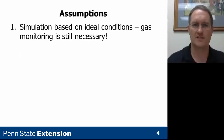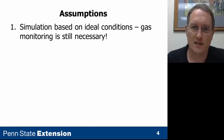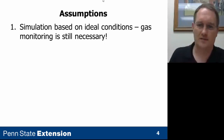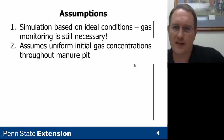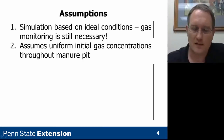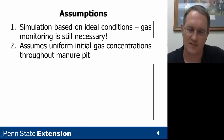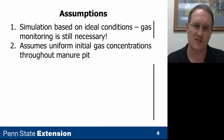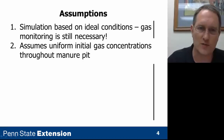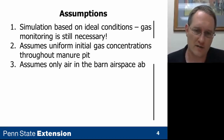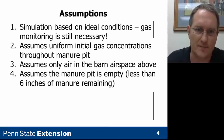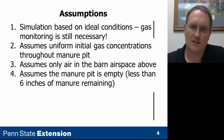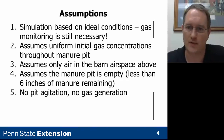Some of the assumptions that went into this: the simulation is based on ideal conditions, so gas monitoring is still necessary — be safe. It assumes uniform initial pit gas concentrations throughout the manure pit. In reality you may have non-uniform conditions with higher concentrations in corners or low-lying spaces that don't get much air ventilation. It also assumes the airspace above in the barn is pure air with no gas when the simulation starts, and that the manure pit is empty or has less than six inches of manure remaining with no agitation and no generation of gas.